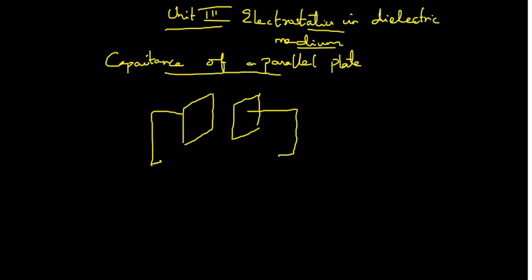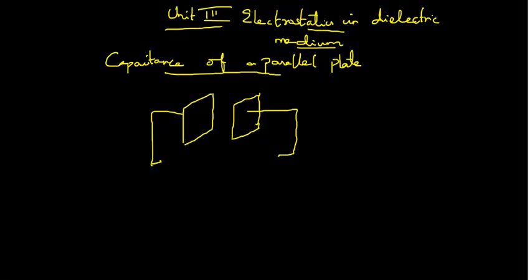Here you have two parallel plates. In between, the capacitor will be present. This is connected to some potential — some potential will be applied in between. So, the field is passed through this. This is how a dielectric appears to be.